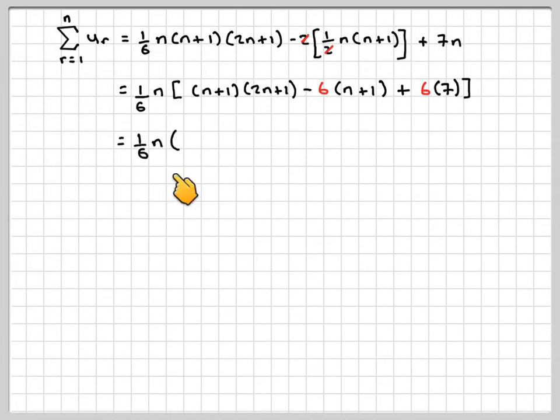So we've got 1 sixth n, expanding this, we've got 2n squared, and then we've got n plus 2n, which is 3n plus 1, minus 6n, minus 6, plus 42.